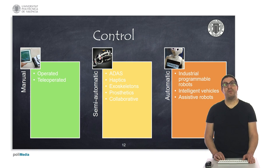The vast majority of robots, anyway, are operated in automatic mode. This is the case of industrial programmable robots, intelligent vehicles, assistive robots, etc.